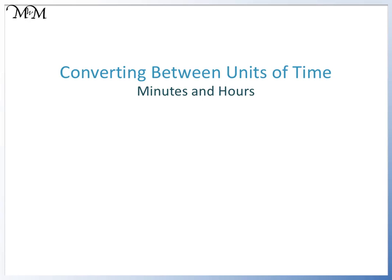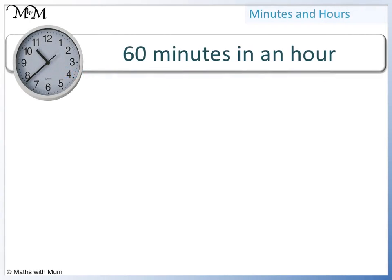Hi and welcome to our lesson on converting between minutes and hours. There are 60 minutes in an hour, so we can say that 1 hour equals 60 minutes. If we know that 1 hour equals 60 minutes, we can work out how many minutes there are in half an hour. Half an hour is half of 60 minutes, which is 30 minutes.